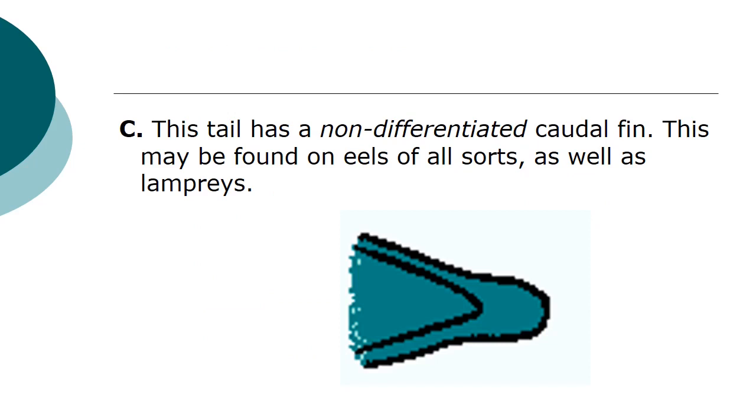This tail has a non-differentiated caudal fin. As you can see in the picture, this caudal fin is not differentiated. This type may be found on eels of all sorts as well as lampreys.